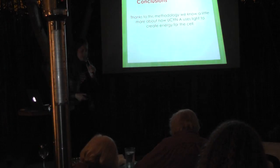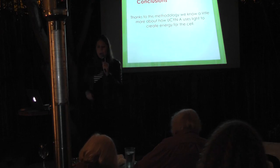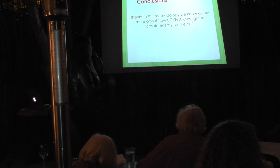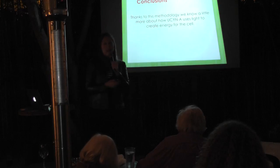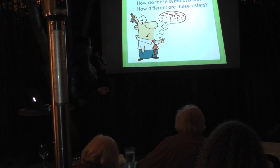In conclusion, thanks to this methodology, we know a little more about how UCYN-A uses light to create energy for the cell. I am writing an article right now to publish all this data. There is another objective I'm working on in my project: how does this symbiosis look? How different are the three sisters? Are they twins — similar or different?